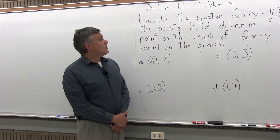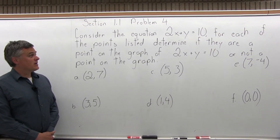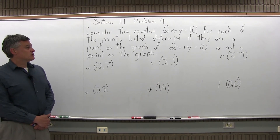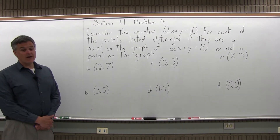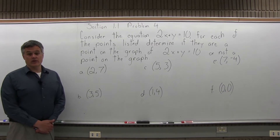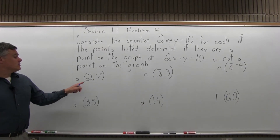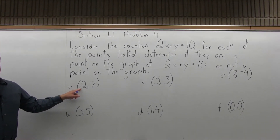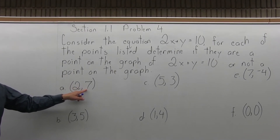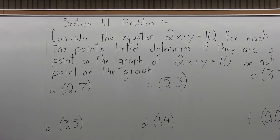This is Problem 4 from Section 1.1. Consider the equation 2x plus y equals 10. For each of the points listed, determine if they are a point on the graph of 2x plus y equals 10 or not a point on the graph. What you have to do is put the x-coordinate of the given point into the x-value of the equation and the y-coordinate into the y-value, and see if the equation comes out true or false.